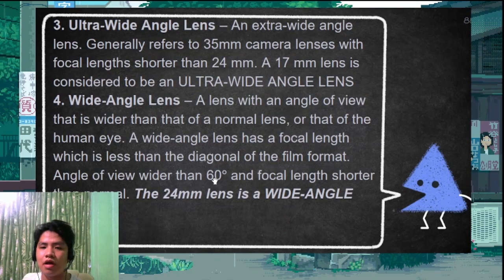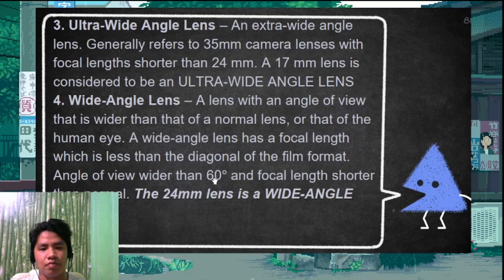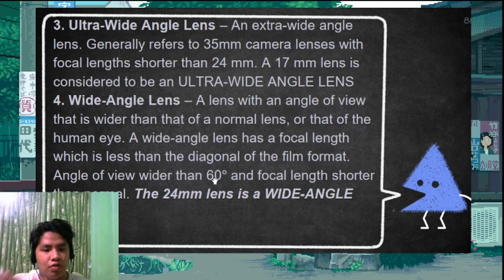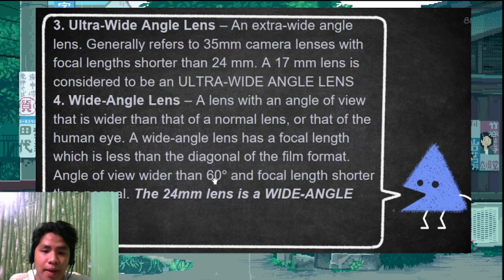The ultra-wide angle lens has a focal length shorter than 24mm, giving a very wide angle of view of more than 45 degrees. The wide-angle lens has a focal length from 35mm down to 24mm, with an angle of view of about 60 degrees. As the angle of view increases, the image gets distorted.